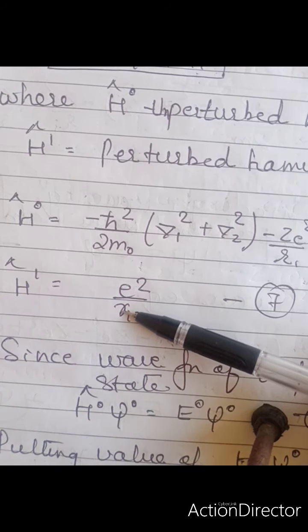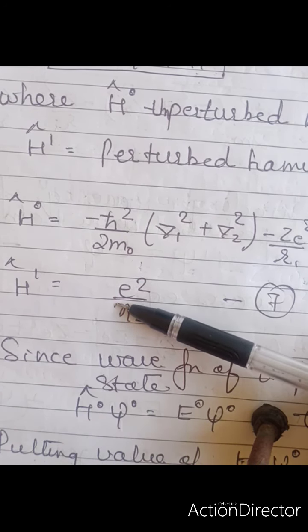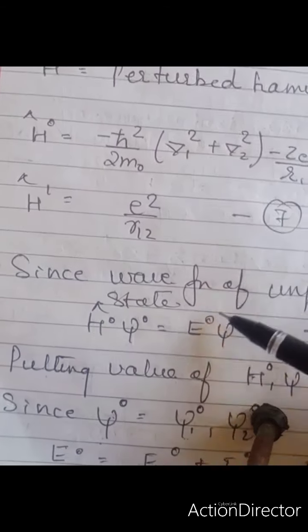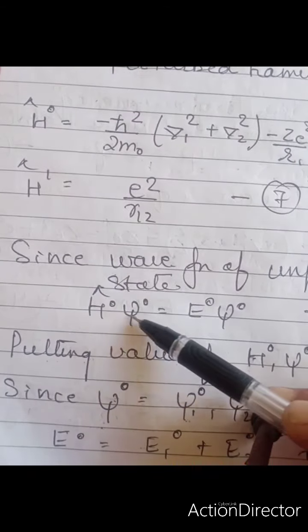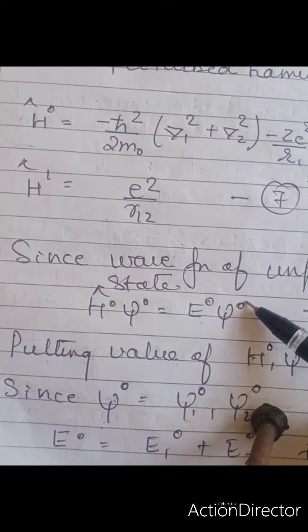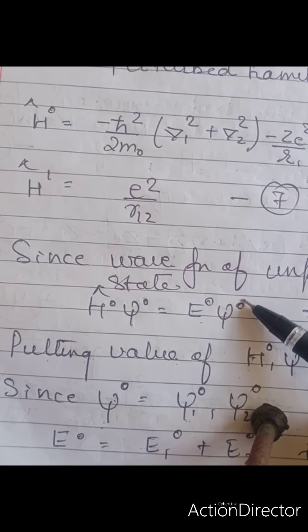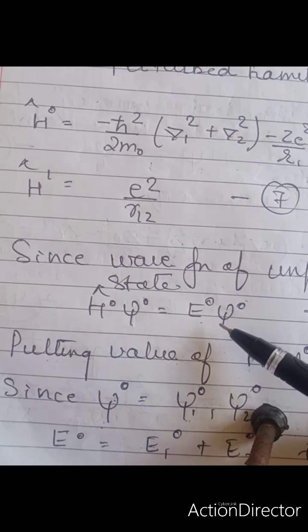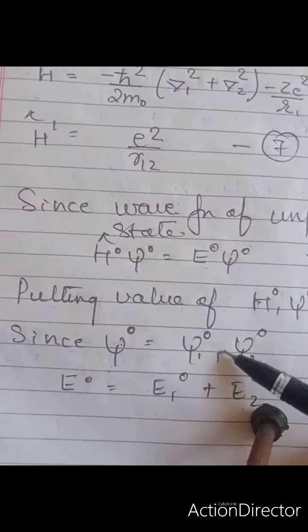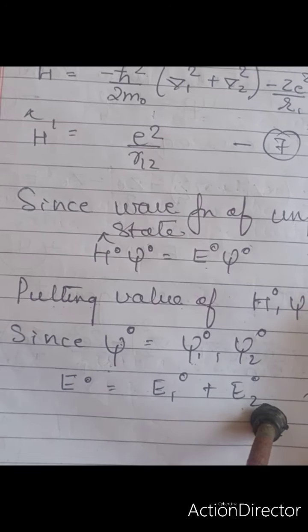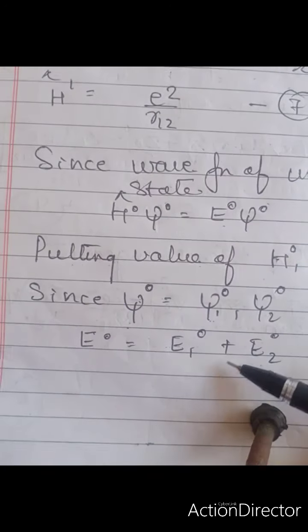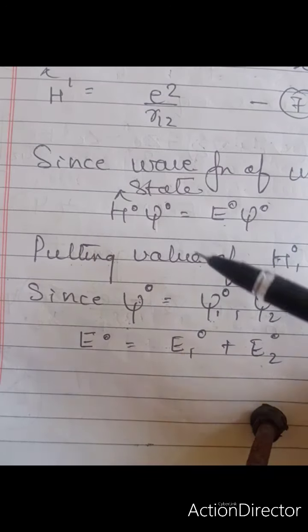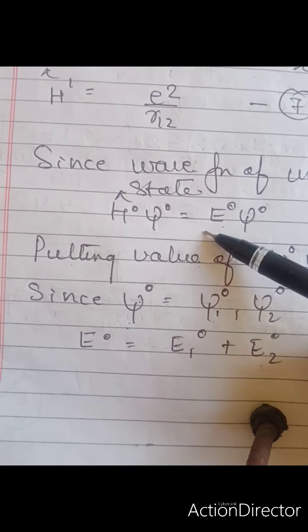In our perturbation theory framework, the wave function of the unperturbed state satisfies H⁰·ψ⁰ = E⁰·ψ⁰. We know the values of ψ⁰ and E⁰. Since ψ⁰ = ψ₁⁰·ψ₂⁰ and E⁰ = E₁⁰ + E₂⁰ and so on, we will be putting these values into the equation.